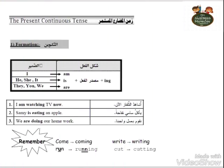Here we go on grammar. Grammar is present continuous tense, and you can see AM/IS/ARE with verb in -ING. I am, he, she, it, they, we, you. For example: I'm watching TV now. Sam is eating an apple. We are doing our homework now.